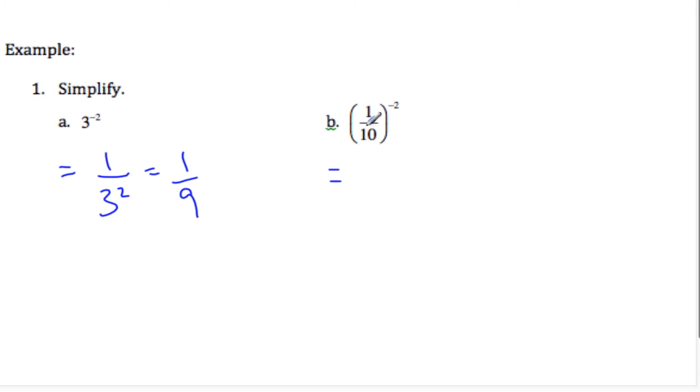If I think about this one, the negative switches it around. So it flips my fraction, it goes 1 over 1 tenth squared. Okay. Which, if I flip, I have to divide it 1 times 10 over 1, flipping my fraction squared, which ends up being 100.